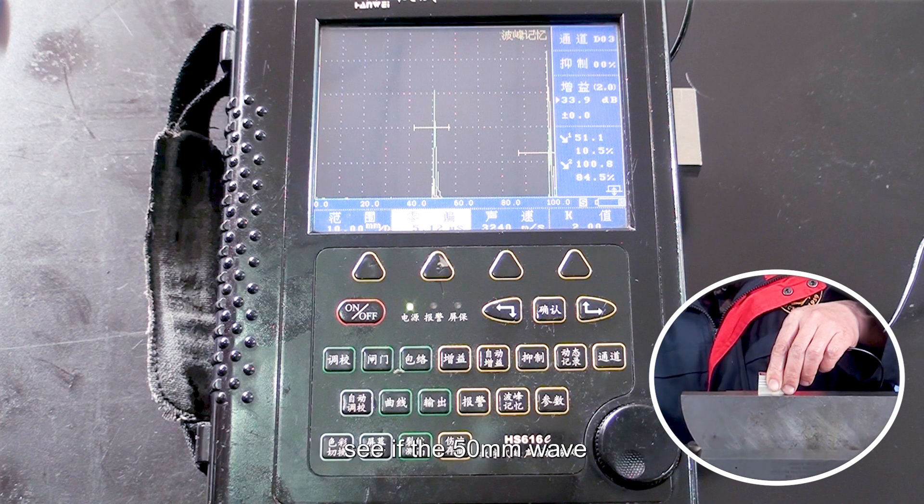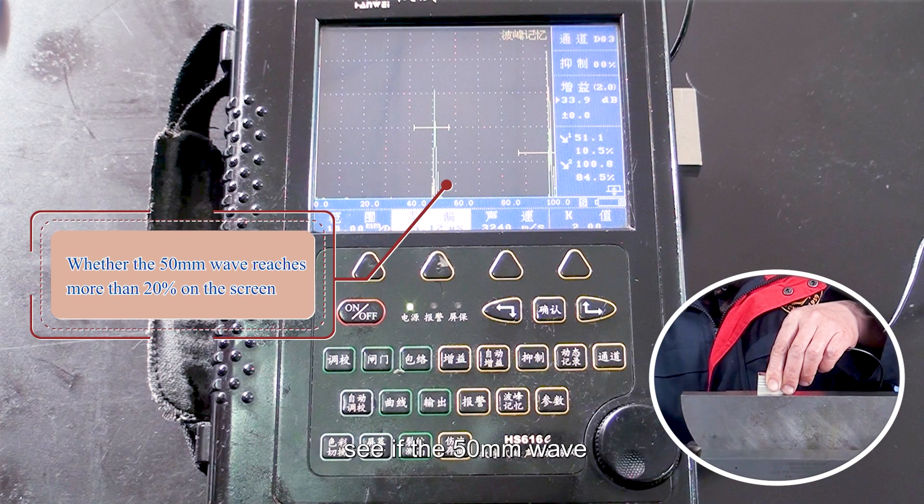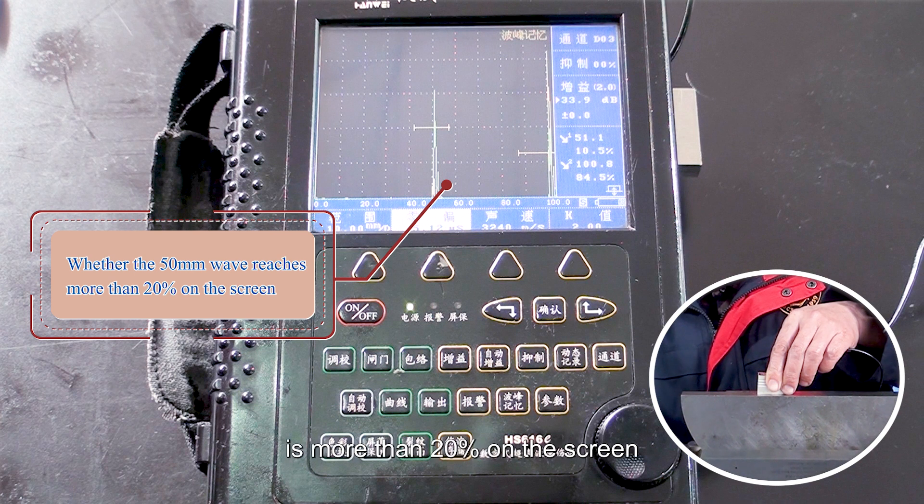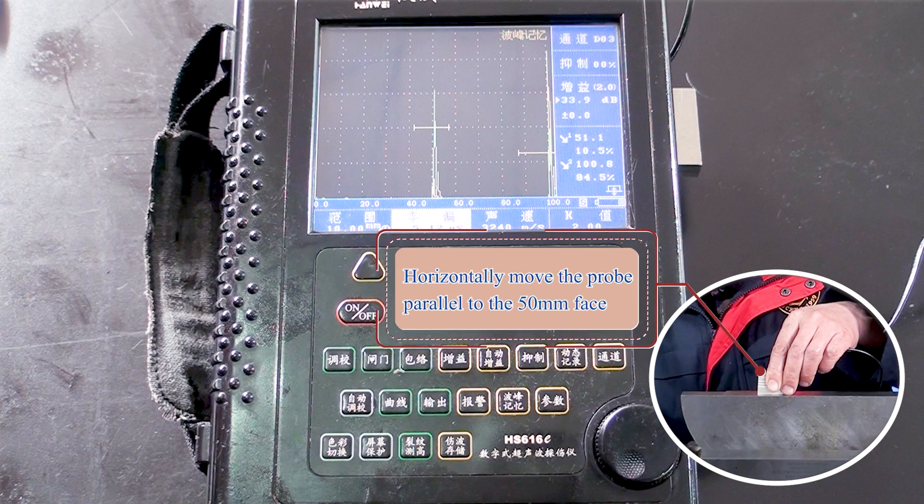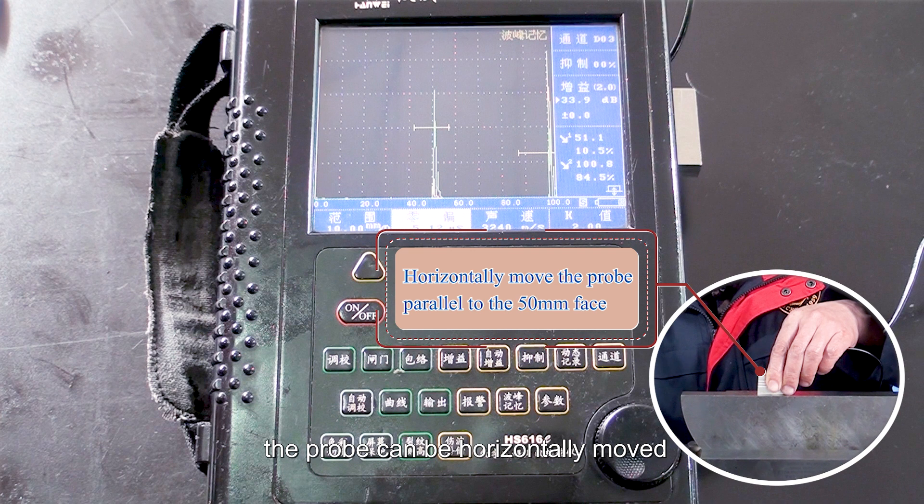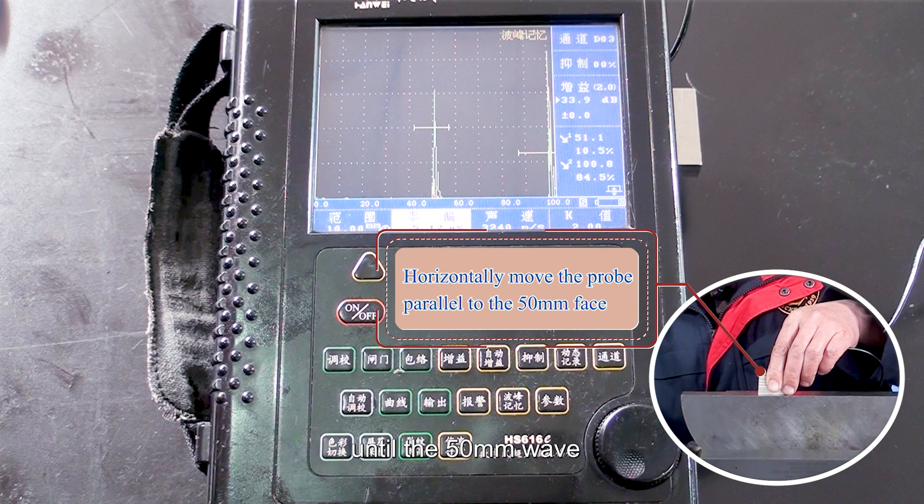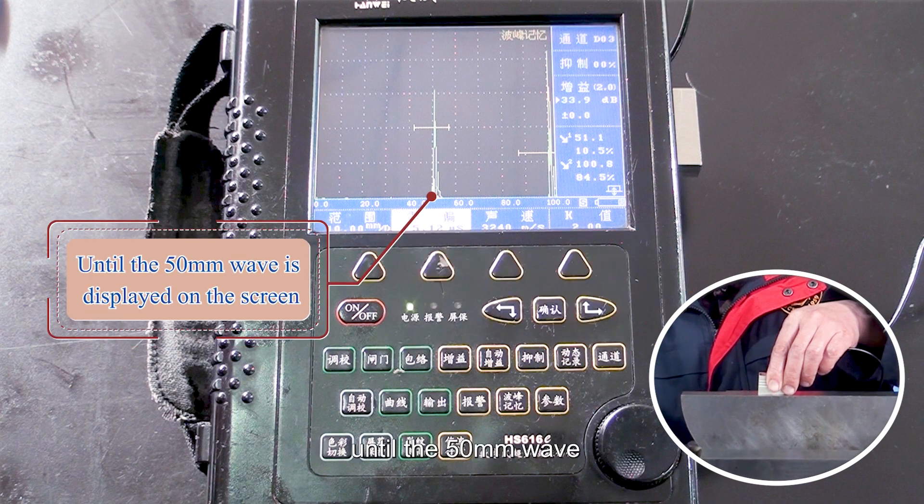At this time, see if the 50 mm wave is more than 20 percent on the screen. If it is lower than that, the probe can be horizontally moved to the 50 mm phase in parallel until the 50 mm wave is displayed on the screen.